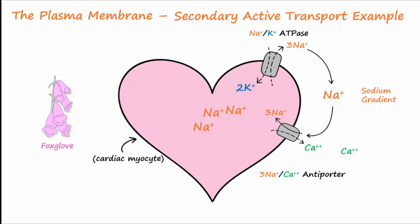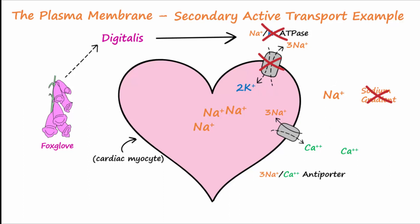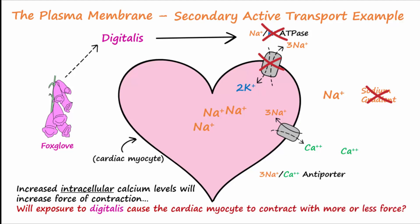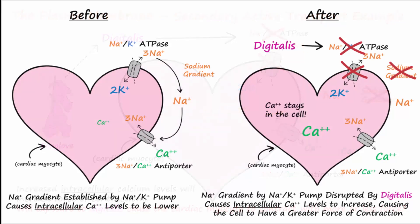A special flower called foxglove contains a compound called digitalis. Digitalis inhibits the sodium-potassium pumps in the membrane of cardiac myocytes. Knowing that increased intracellular levels of calcium will increase the force of contraction by the cardiac myocytes, what effect do you think exposure to digitalis will have on cardiac myocyte contraction? Will the cells contract with more or less force? Pause the video now as you contemplate your answer. Inhibition of the sodium-potassium pump by digitalis causes a change in the sodium gradient, which in turn decreases the driving force for the sodium-calcium antiporter, causing less calcium to leave the cell and thus causing intracellular levels of calcium to rise.